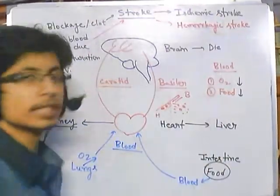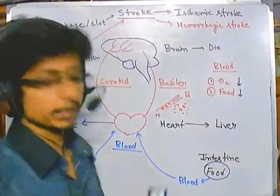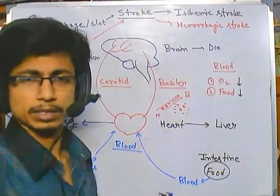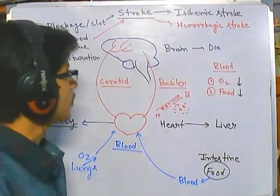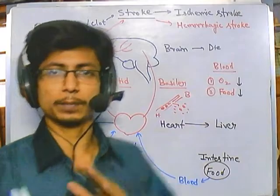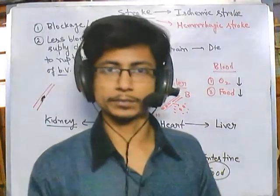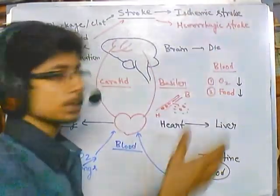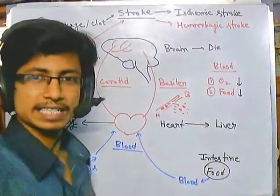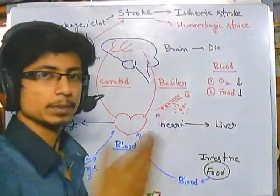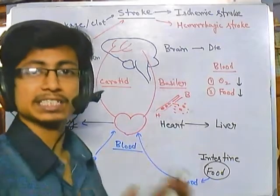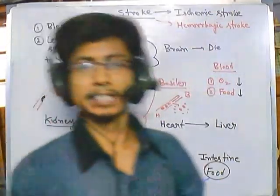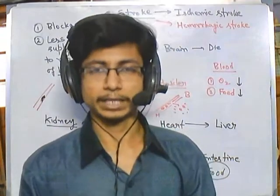So these are the two major different types of strokes. In the next video, we'll be talking about the pathophysiology of stroke, taking both ischemic and hemorrhagic stroke as examples, and looking at the different modifications and changes that occur during these two different types of strokes. I hope that's helpful. Thank you.